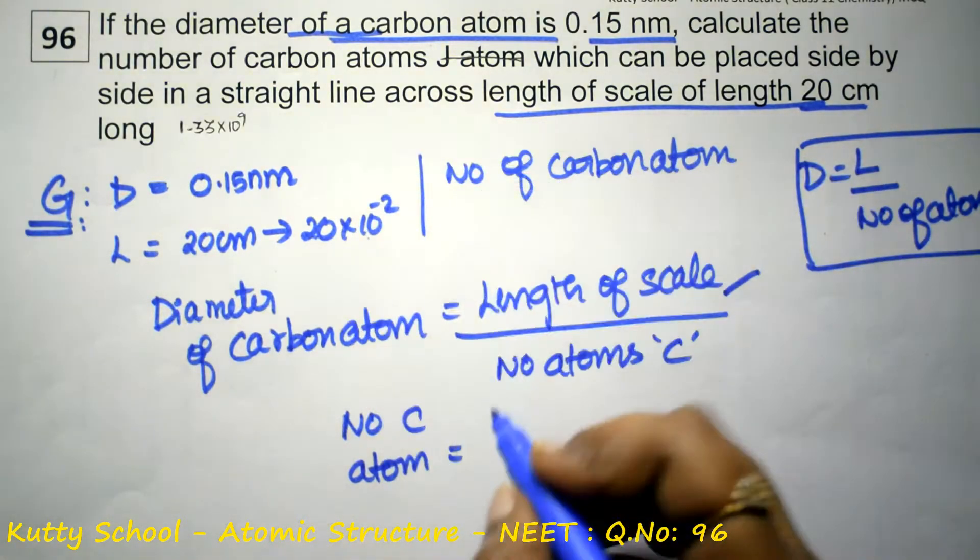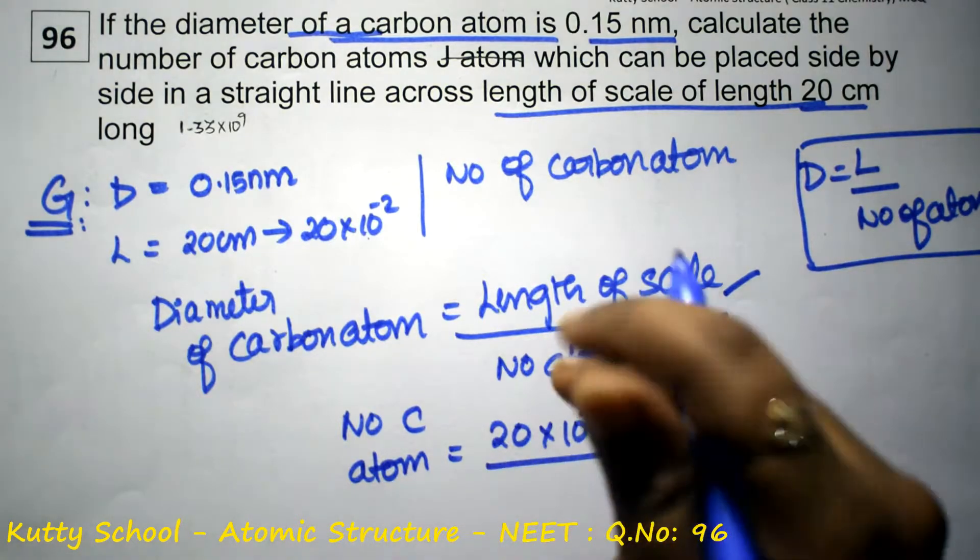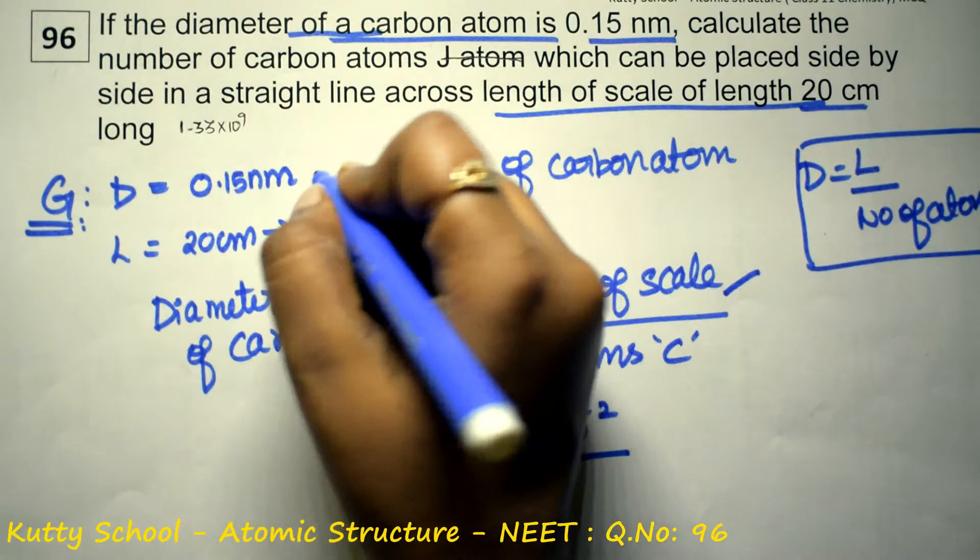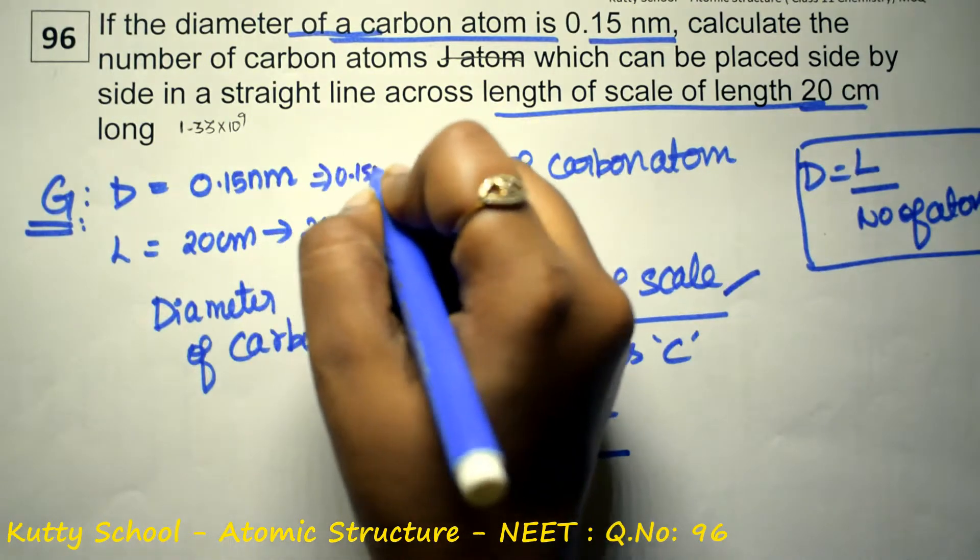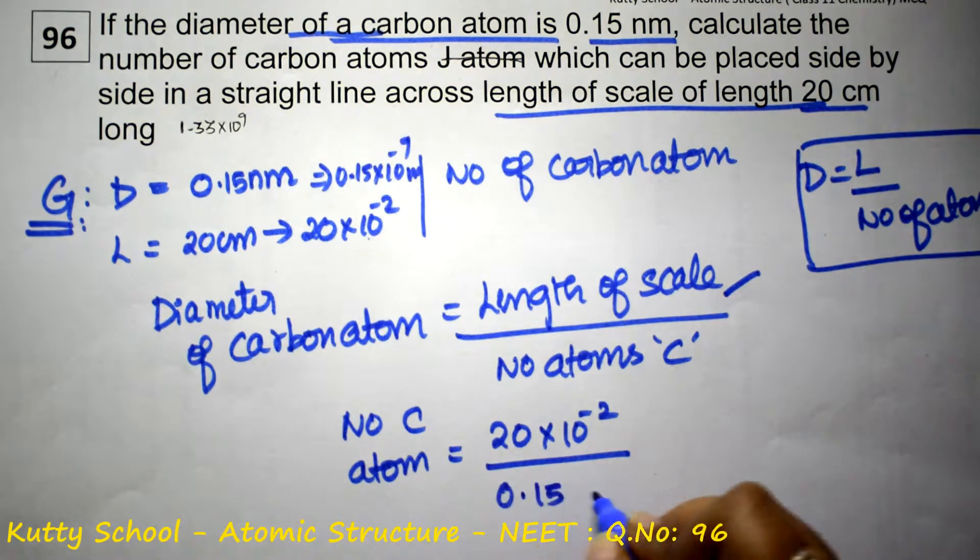So length of the scale given as 20 into 10 power minus 2. Next, diameter is 0.15 nanometer, which is 0.15 into 10 power minus 9 meter.